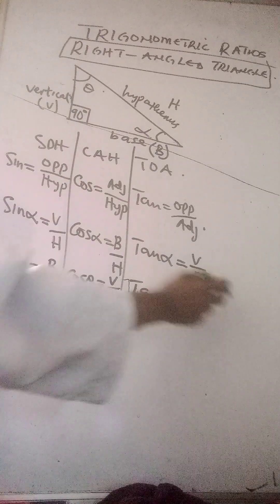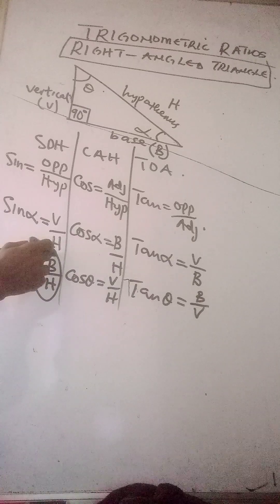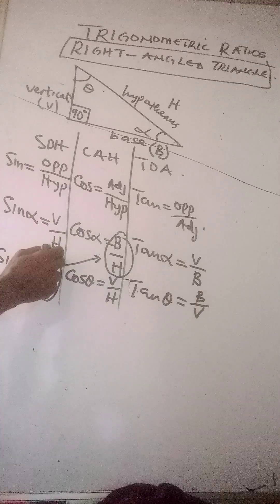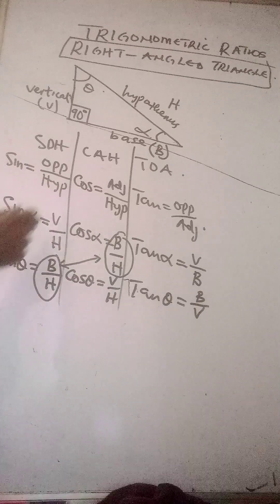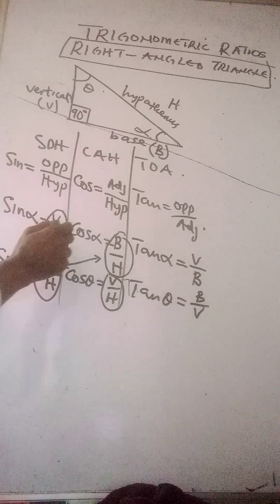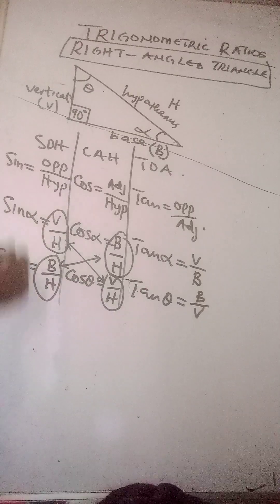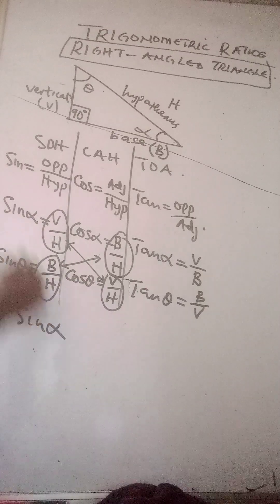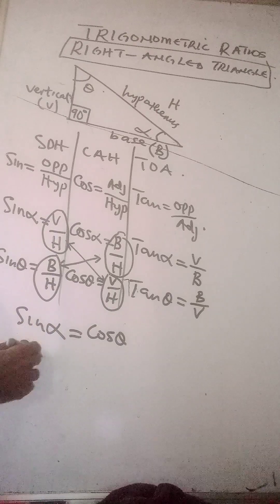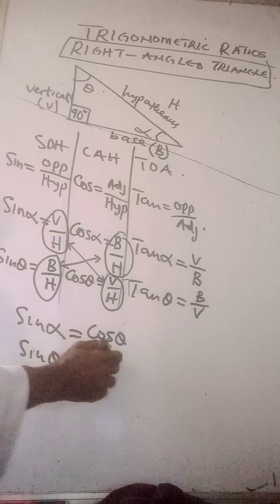Now let us observe something: sine alpha gives V over H, and cosine theta also gives V over H — these two are the same. Similarly, sine theta gives B over H and cosine alpha gives B over H — these two are also the same. That means sine alpha equals cosine theta, and sine theta equals cosine alpha.